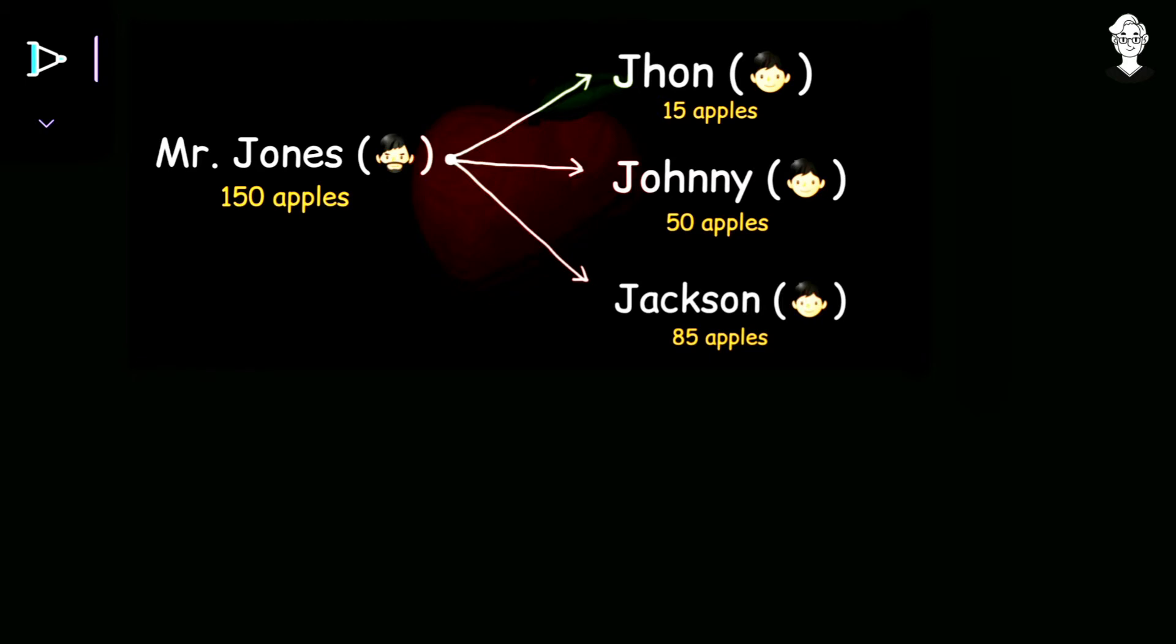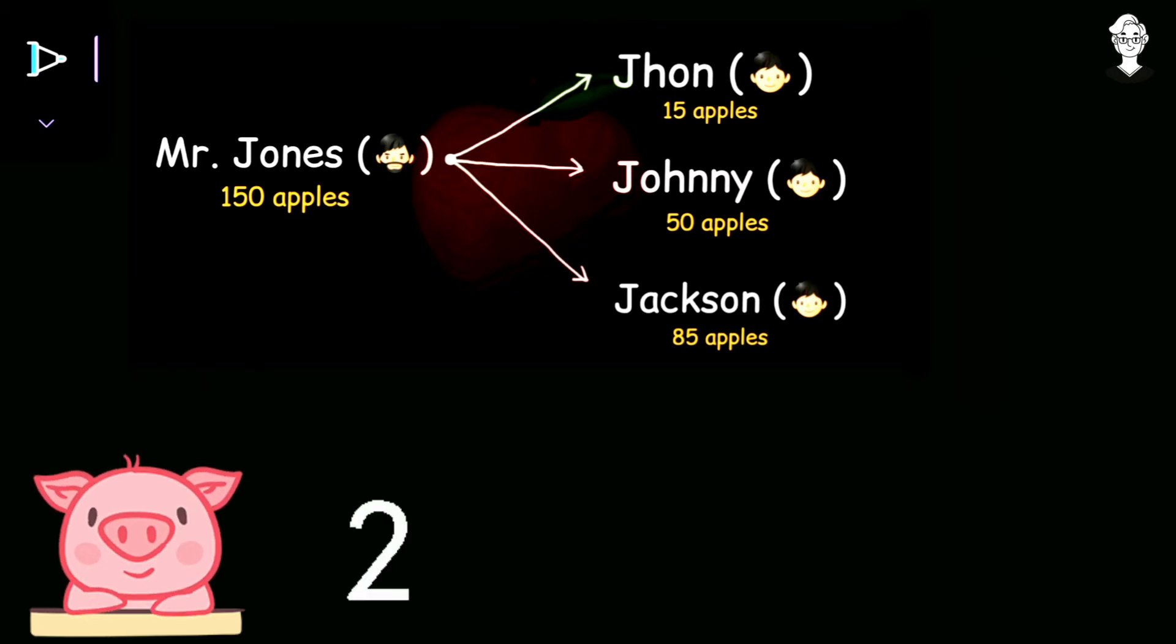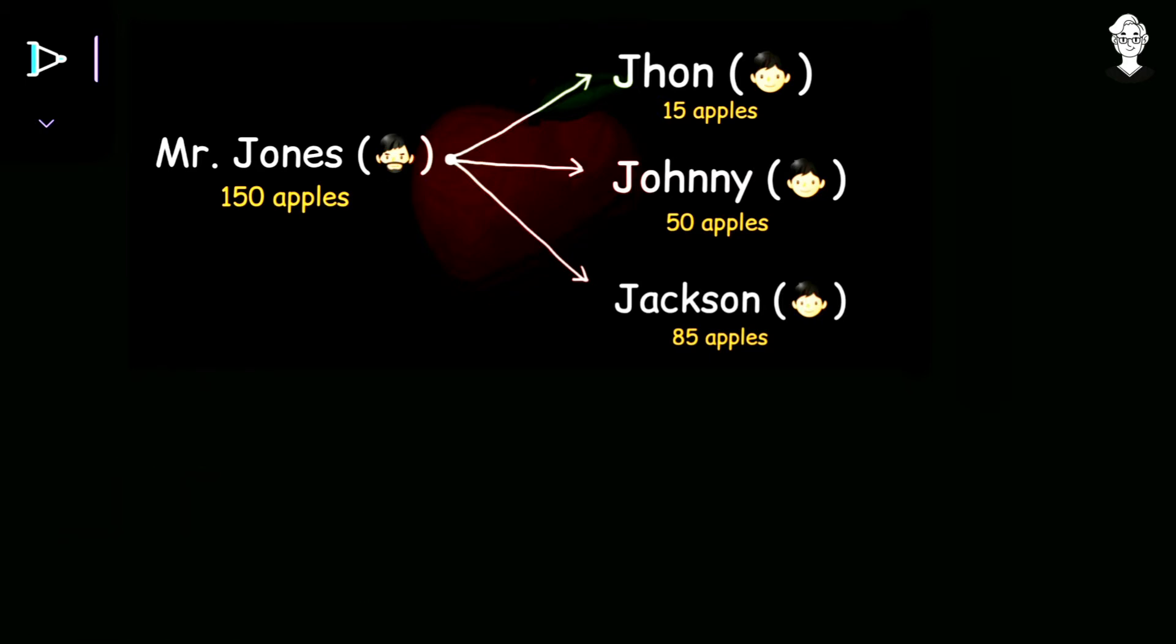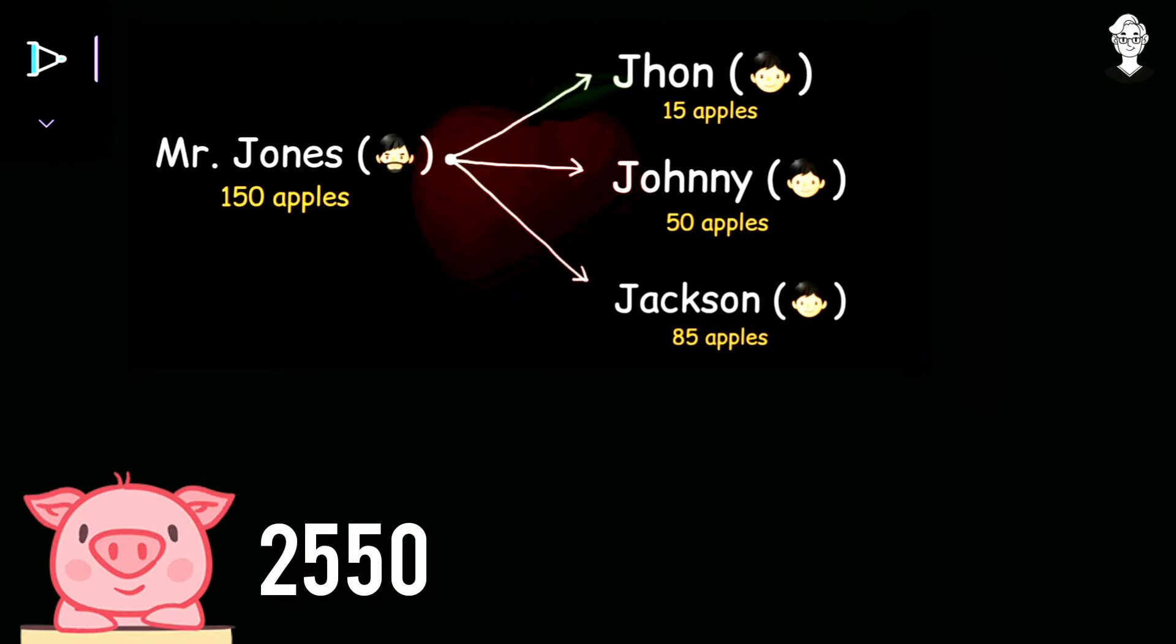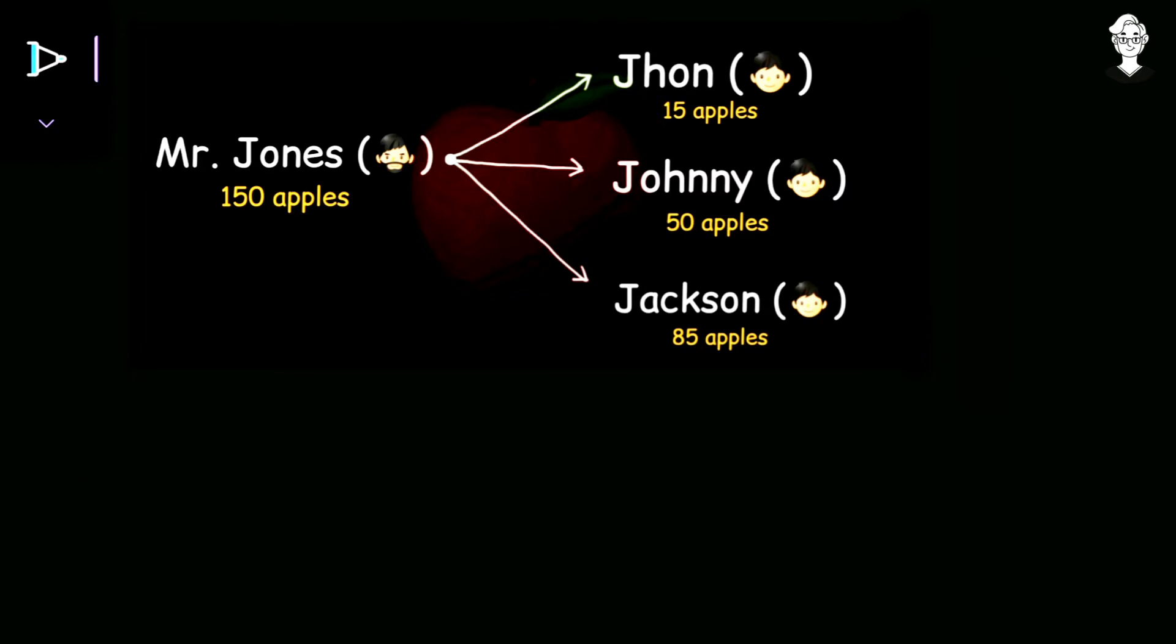First of all, let us discuss the wrong method which most of you must have used. The thing you have used is finding the LCM of these three numbers, that is 15, 50 and 85, and you got it as 2550. Then you told John should sell apples at 170, Johnny at 51 and Jackson at 30.